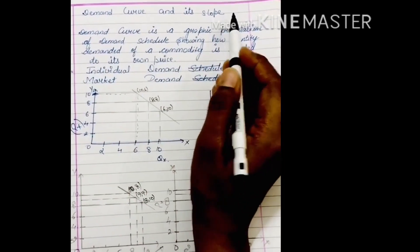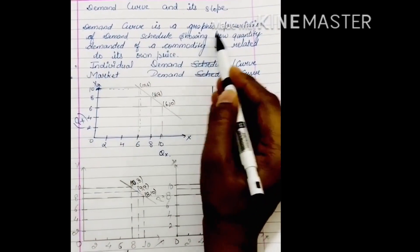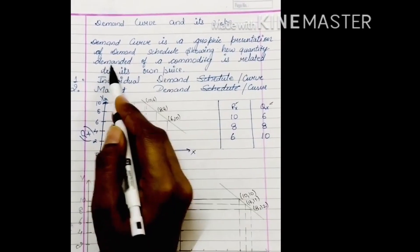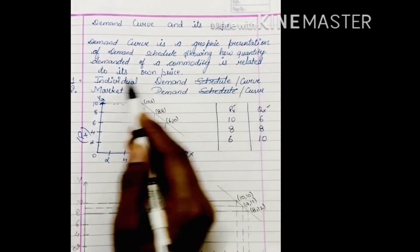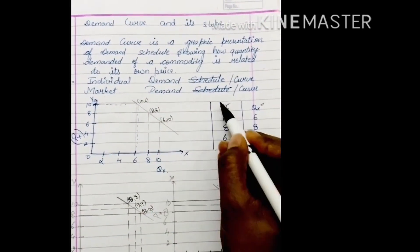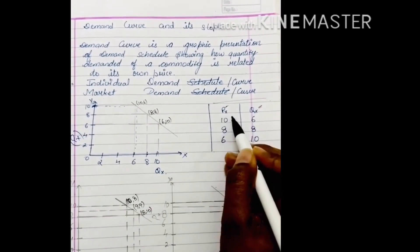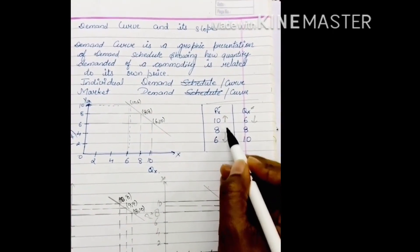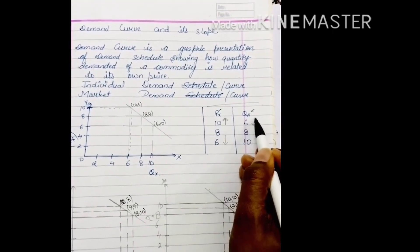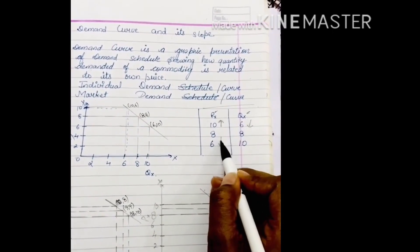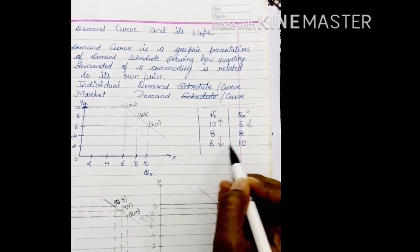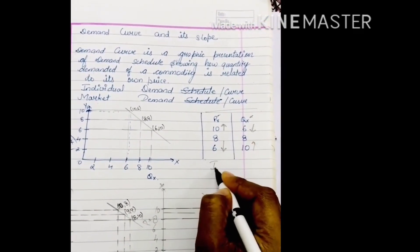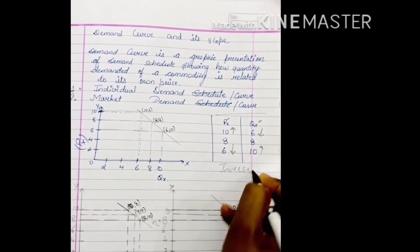The demand curve is a graphical representation of the demand schedule, showing how the quantity demanded of a commodity is related to its own price. As I explained in the demand schedule, if the price is increasing then the demand will go down, and when the price falls then the demand will increase, which shows there is an inverse relation between demand and price.